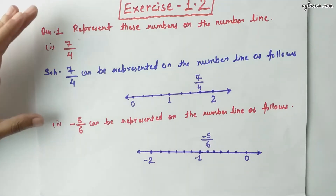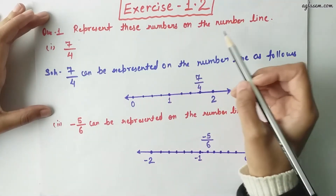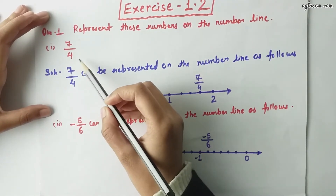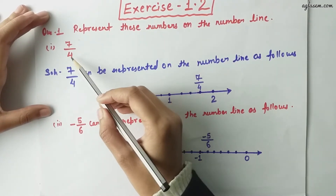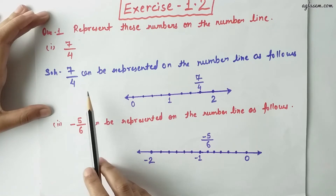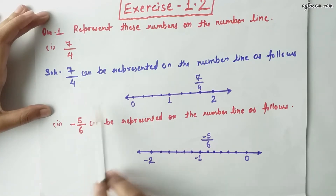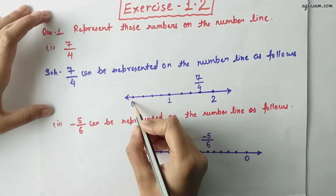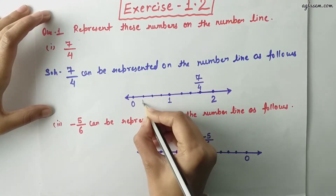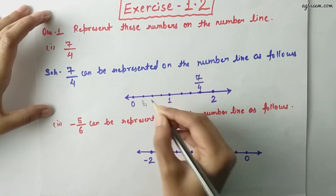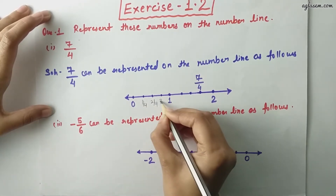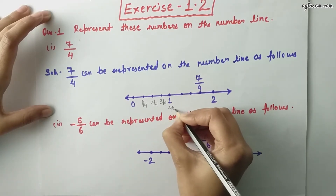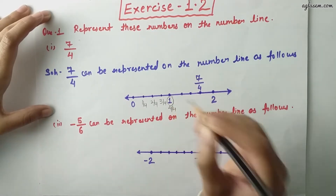Our first question is: represent these numbers on the number line. The first part is 7 by 4. How can we represent this on our number line? First of all write 0, 1 by 4, 2 by 4, 3 by 4, and that is 4 by 4 which equals 1.